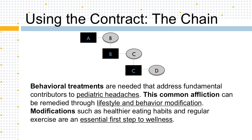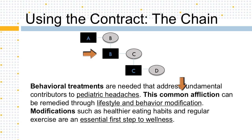Here's a more complicated example to further illustrate how the chain strategy works. The visual helps you see how ideas build off one another. You can think of the squares as topics and the circles as comments, or the squares as known information and the circles as new information. For this example, the square A represents the bolded topic that says behavioral treatments, while the gray circle B represents the underlined comment pediatric headaches, which then becomes the bolded topic for the next sentence that clearly signals back to the headaches by saying this common affliction.